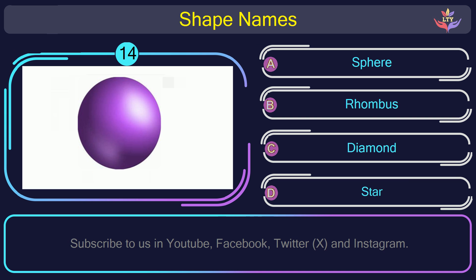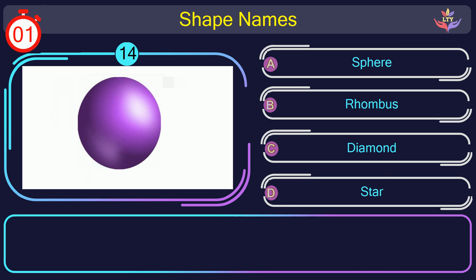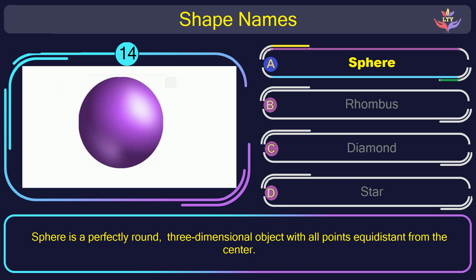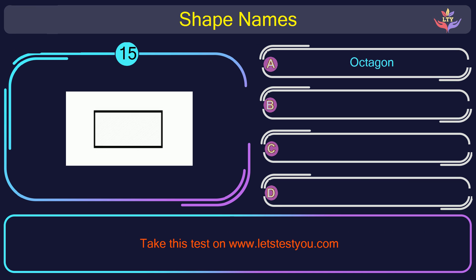Question number 14. Guess the name of the shape in this picture. The correct answer is option A. Sphere. Sphere is a perfectly round, three-dimensional object with all points equidistant from the center.